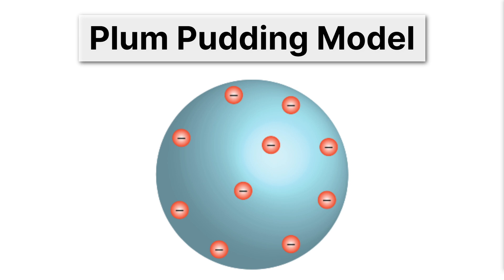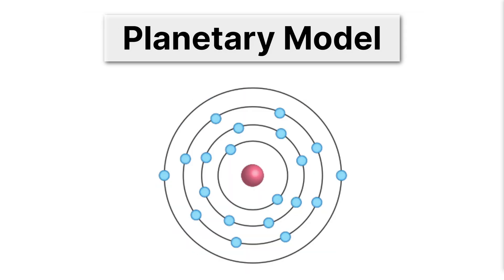That turned out to not be quite right. Rutherford discovered the nucleus, and the planetary model was born, where we have a solid positive nucleus in the center and electrons that orbit around it.